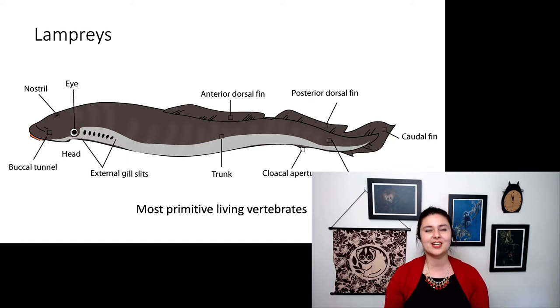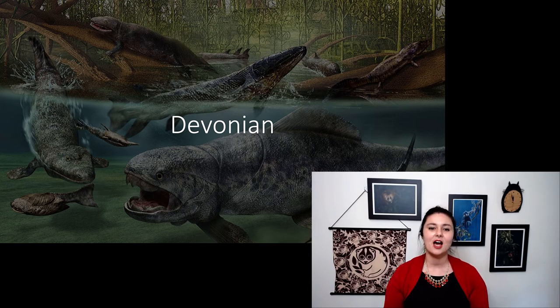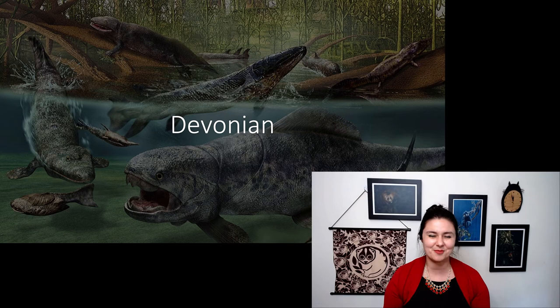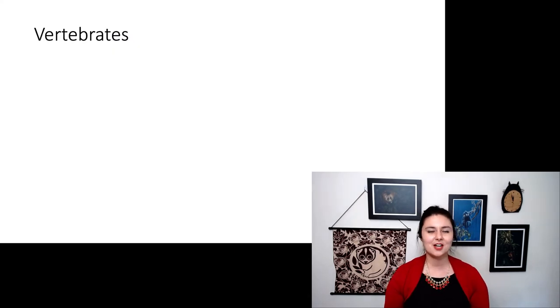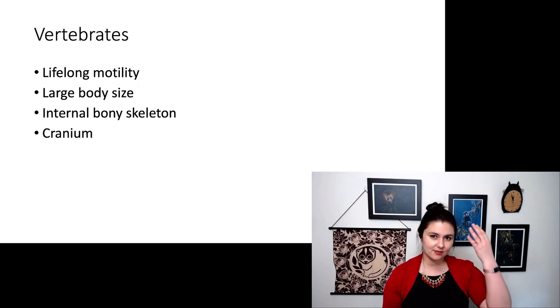After the Cambrian, the next period we want to talk about is the Devonian. The Devonian is known as the Age of Fishes, and we see a lot of armored fishes happening in this period of time, so that indicates that there's definitely a lot of predation going on because they need to protect themselves from each other. Within our vertebrates here, things we see evolving in our vertebrates is a lot of mobility. So instead of having sessile adult forms, the adults are also mobile. We also see larger body sizes. We also see the development of an internal bony skeleton and the development of a cranium and protection for the head region.